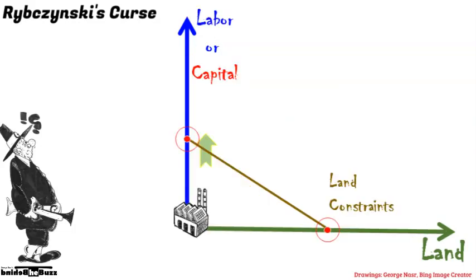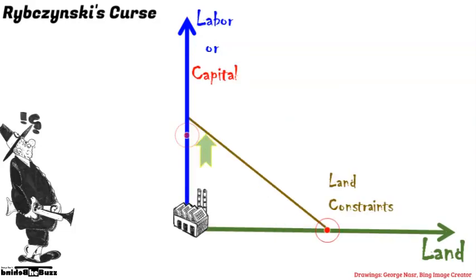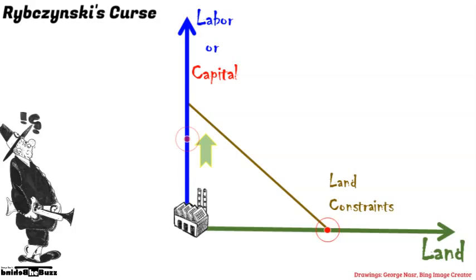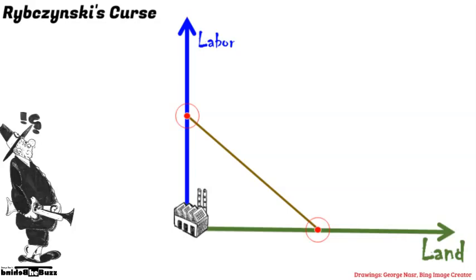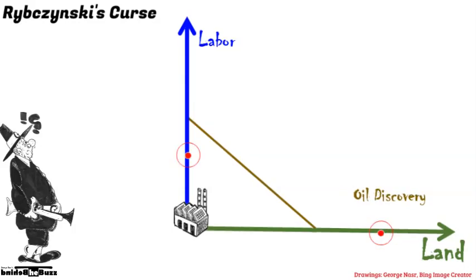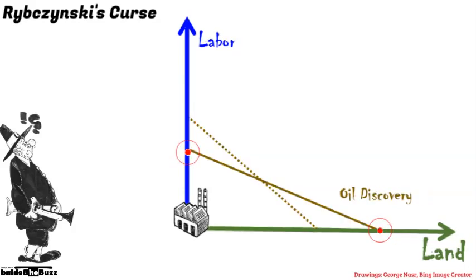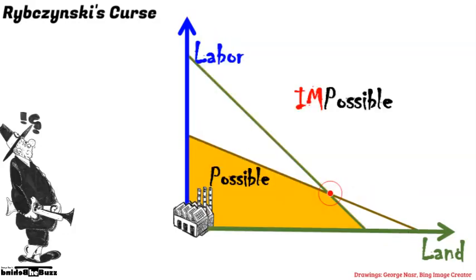In farming, land constrains economic output. If it has no water, you cannot farm it, no matter how much capital you spend or how many laborers you employ. With petroleum, the balance shifts too rapidly. Petroleum is so rich in energy that it shifts the land factor too fast, faster than capital and labor can adjust. The domain of the possible shrinks.